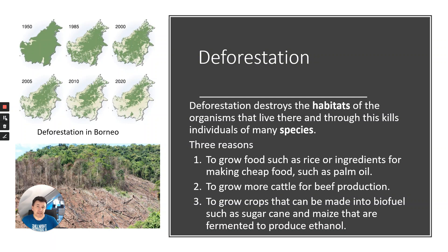Another human impact is deforestation. This hasn't just occurred in tropical rainforests — in northern Europe, including the UK, great forests and woodlands were cut down 500 to 1,000 years ago as populations grew. Here's a diagram of deforestation in Borneo — an island where you can see green forest areas have been reduced quite dramatically over 50 years. Deforestation destroys the habitats of organisms living there and kills individuals of many species.